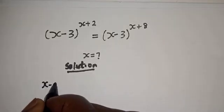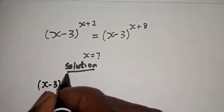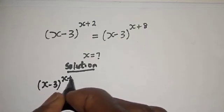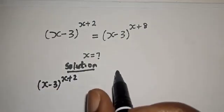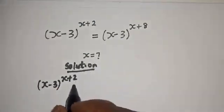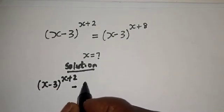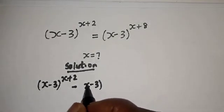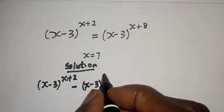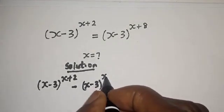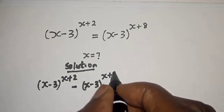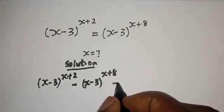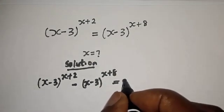x minus 3 raised to the power x plus 2. Let's bring this to this side — it becomes minus x minus 3 raised to the power x plus 8, is equal to 0.